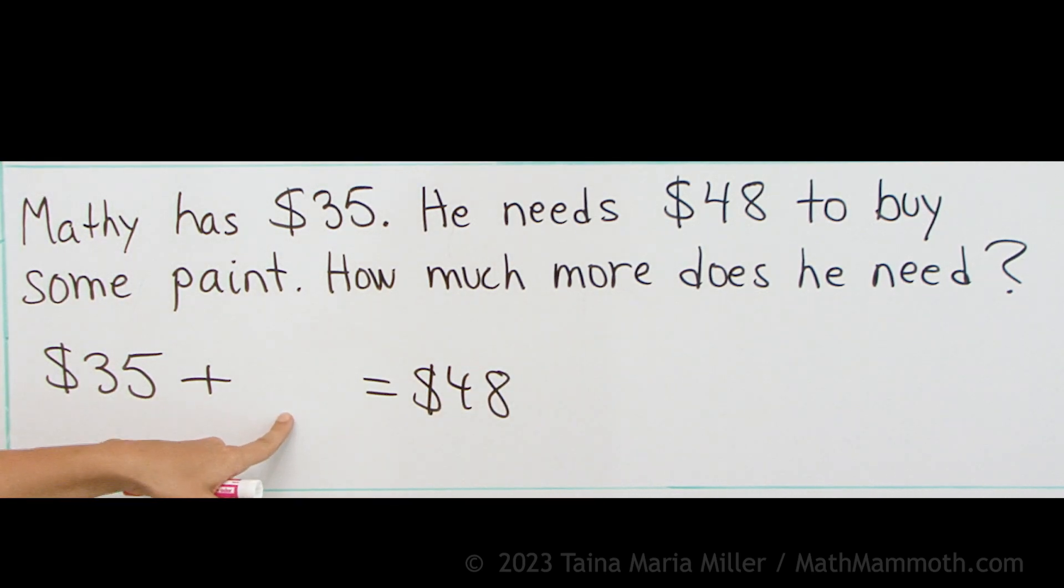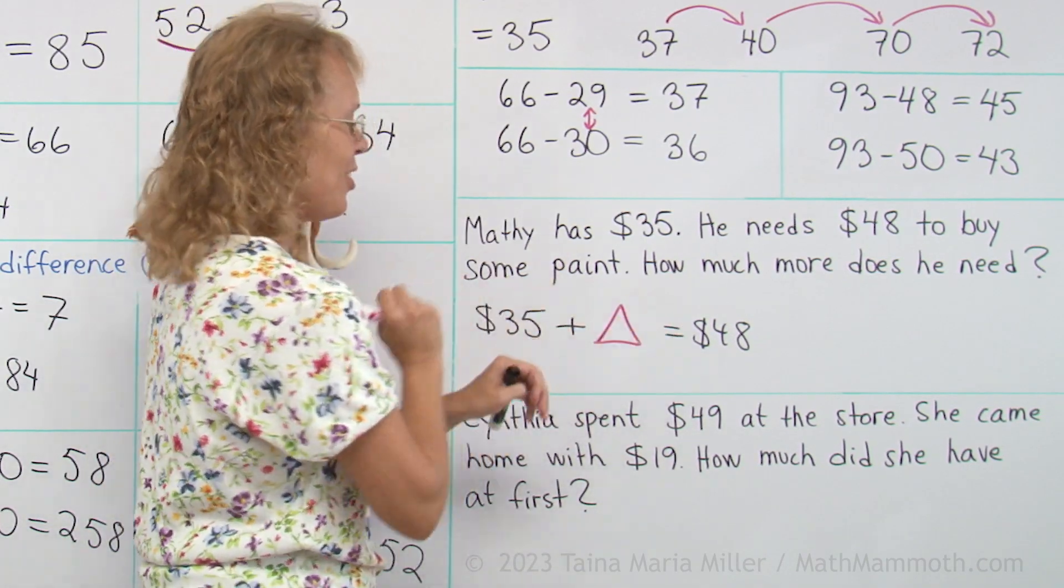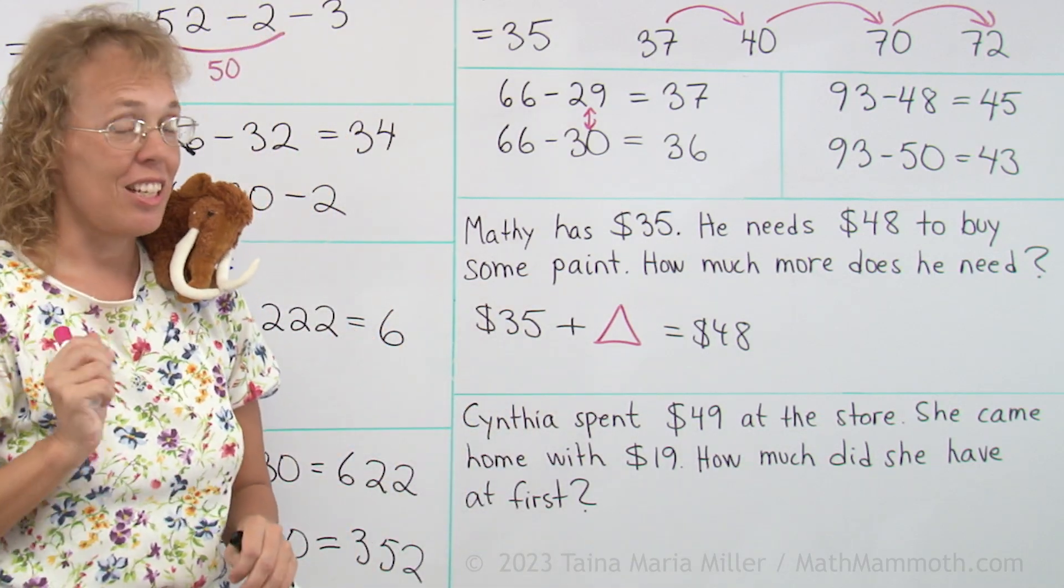Now, how much more? That's the unknown, right? We don't know it yet. So for this, I'm going to use something for the unknown. This time I'm going to use a triangle. So that's my addition with an unknown, and I hope you learn to write these kinds of additions too.